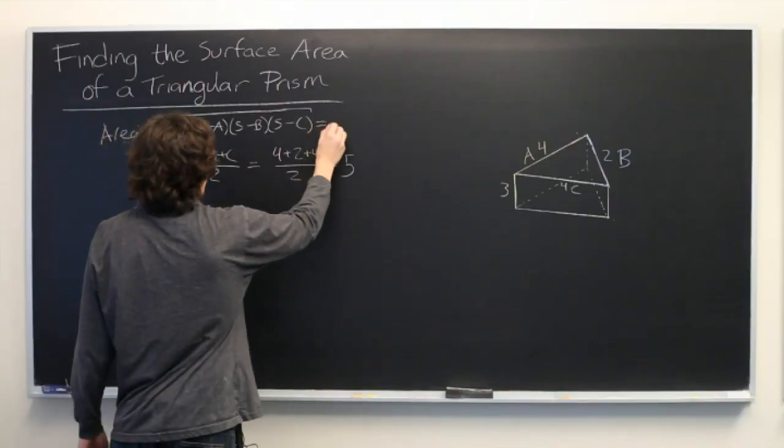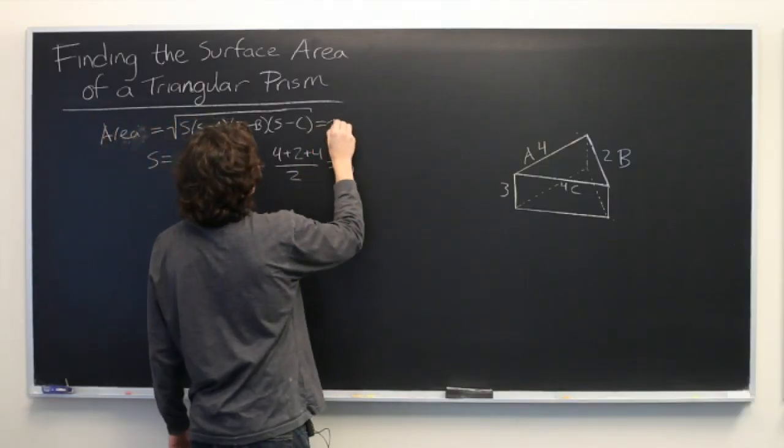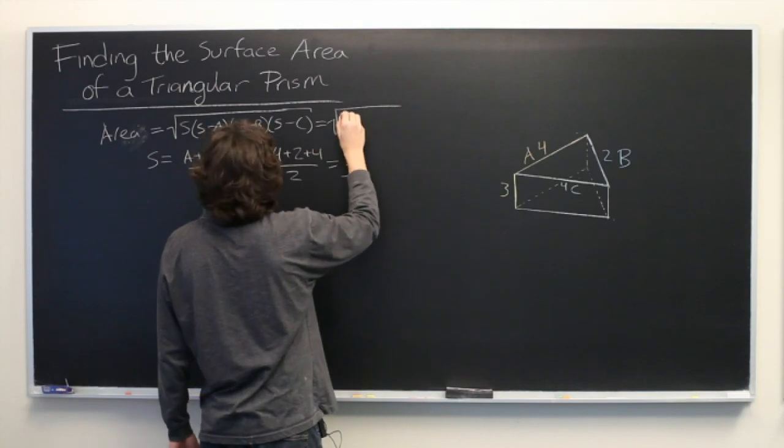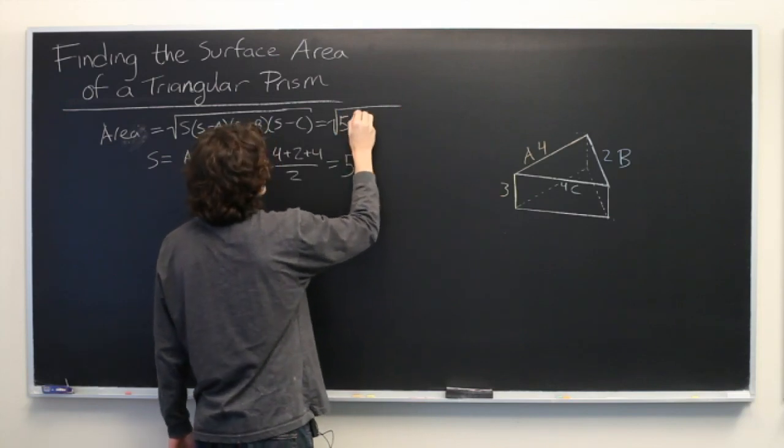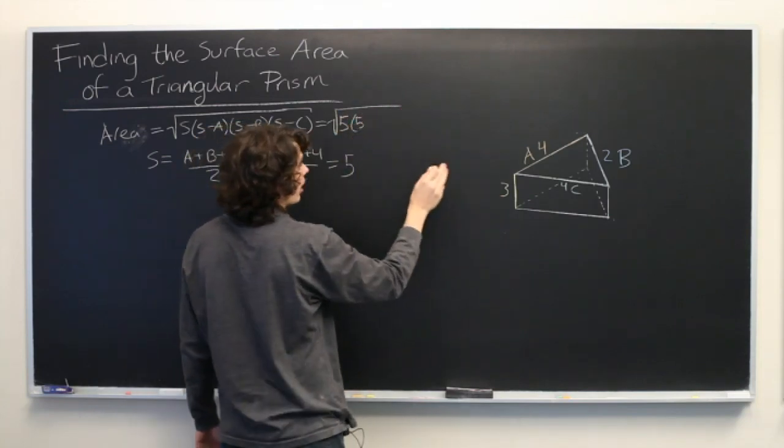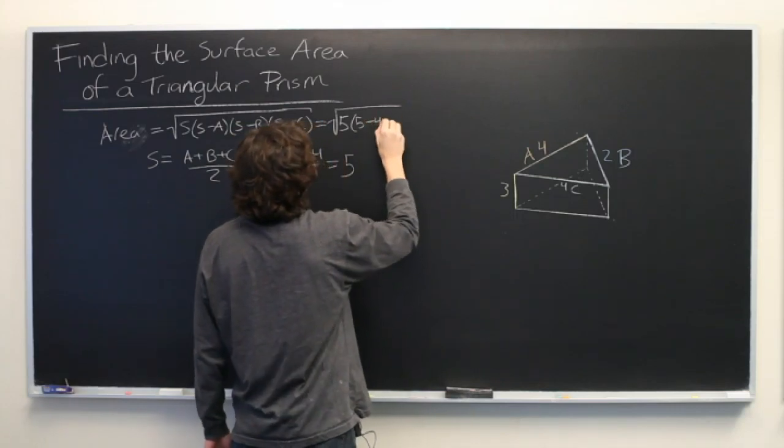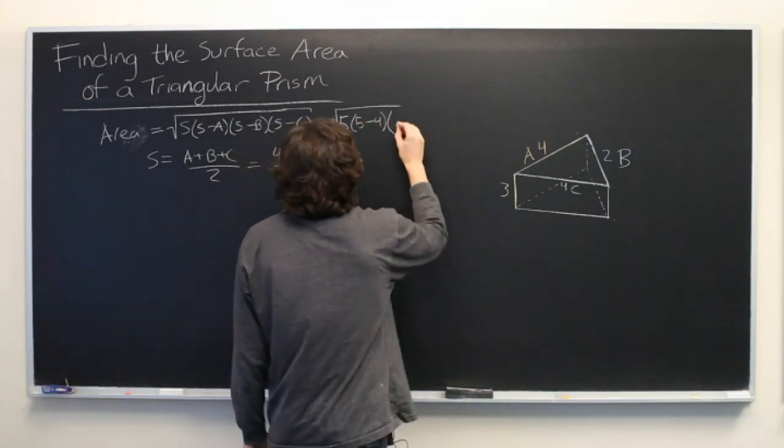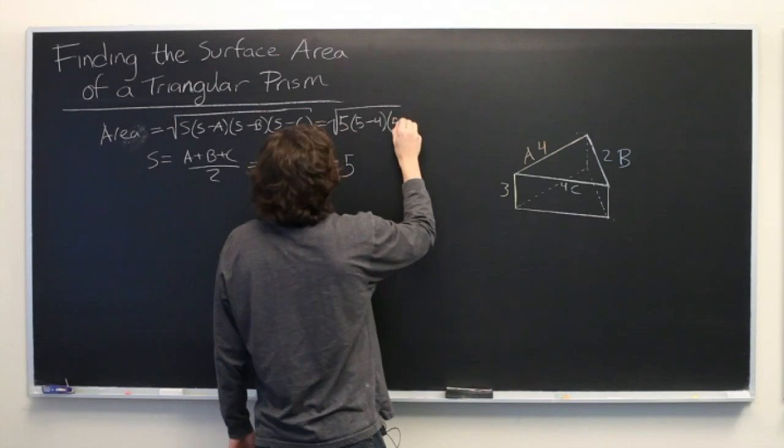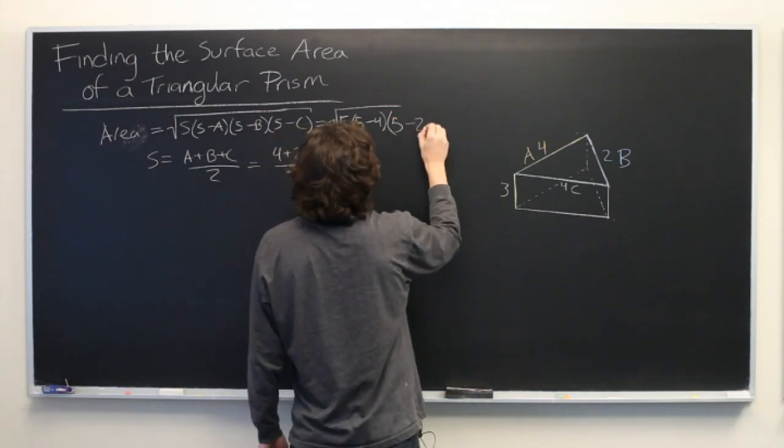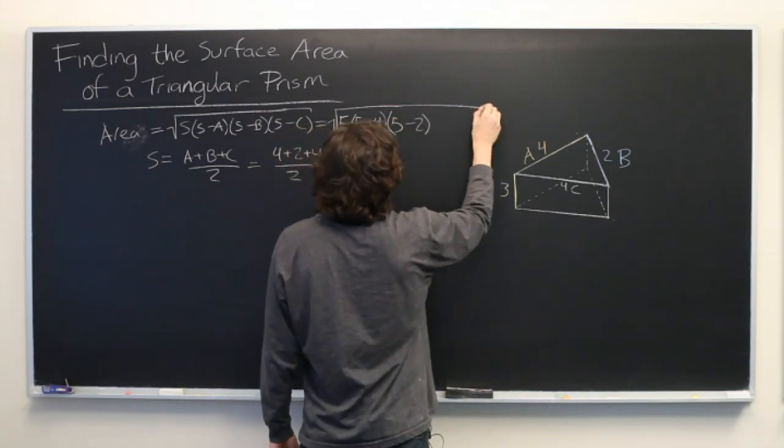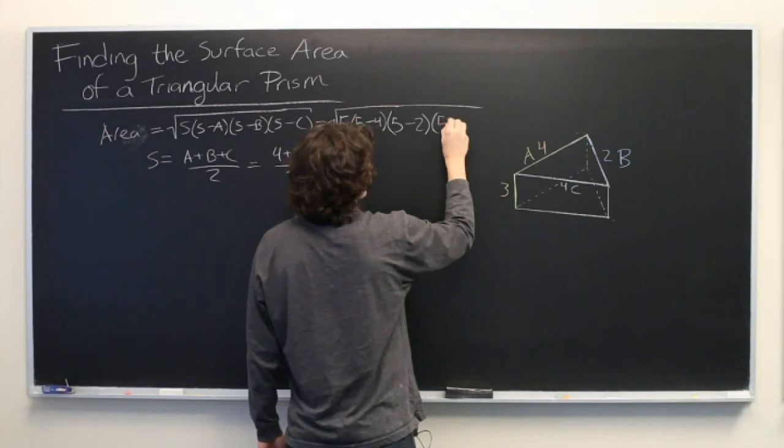So let's start plugging numbers into this formula. We get the square root of 5 times 5 minus A, where A is 4, times 5 minus B, B is 2, times 5 minus C, which is also 4.